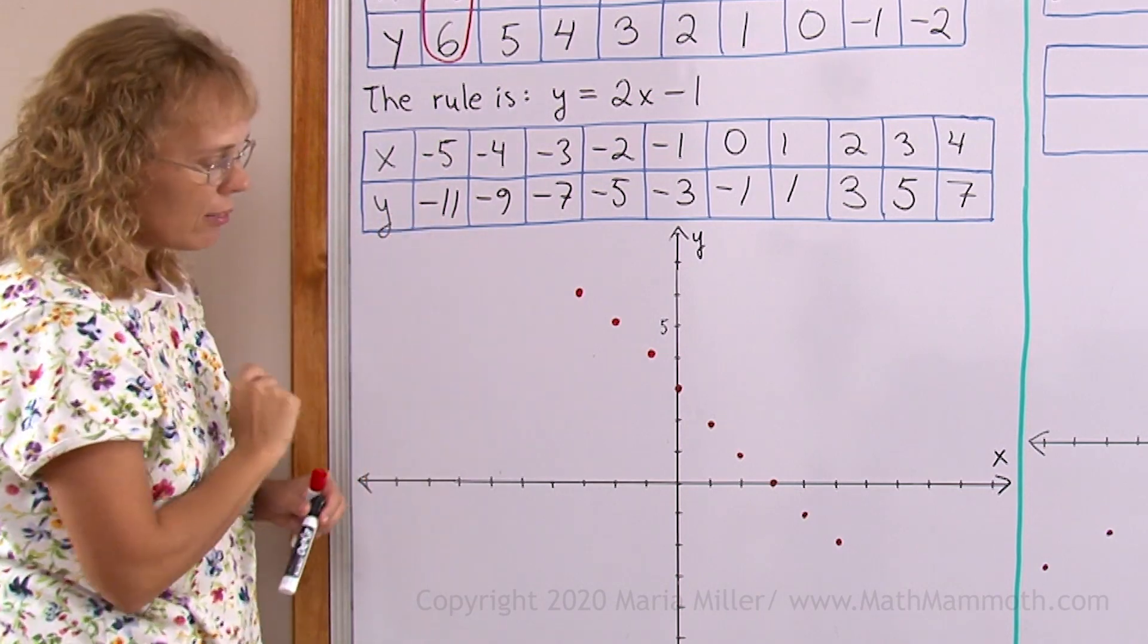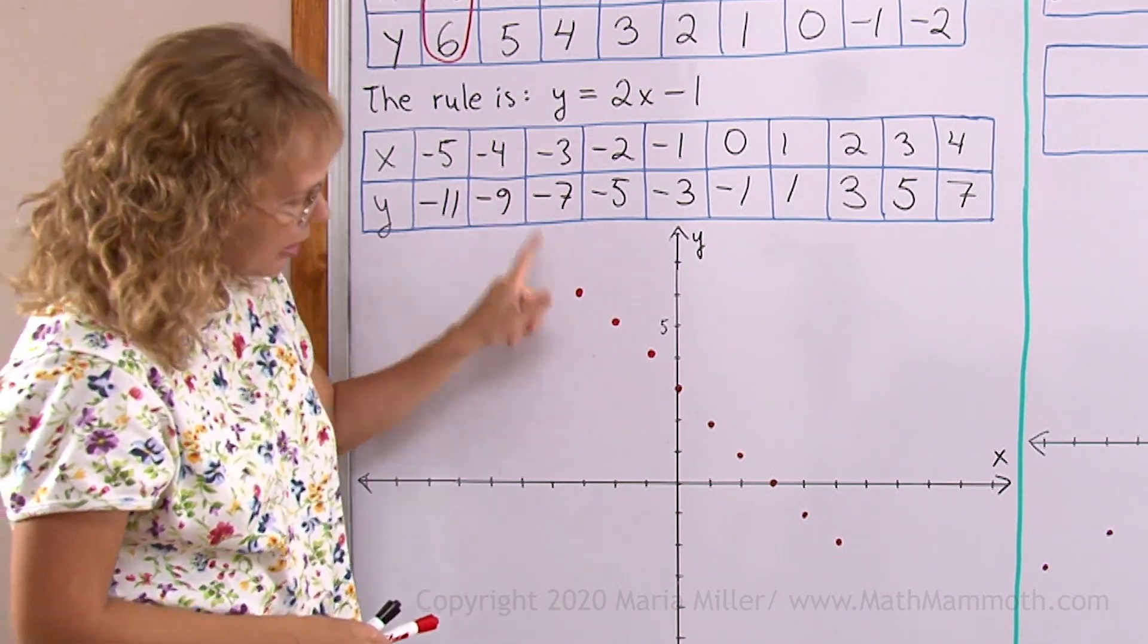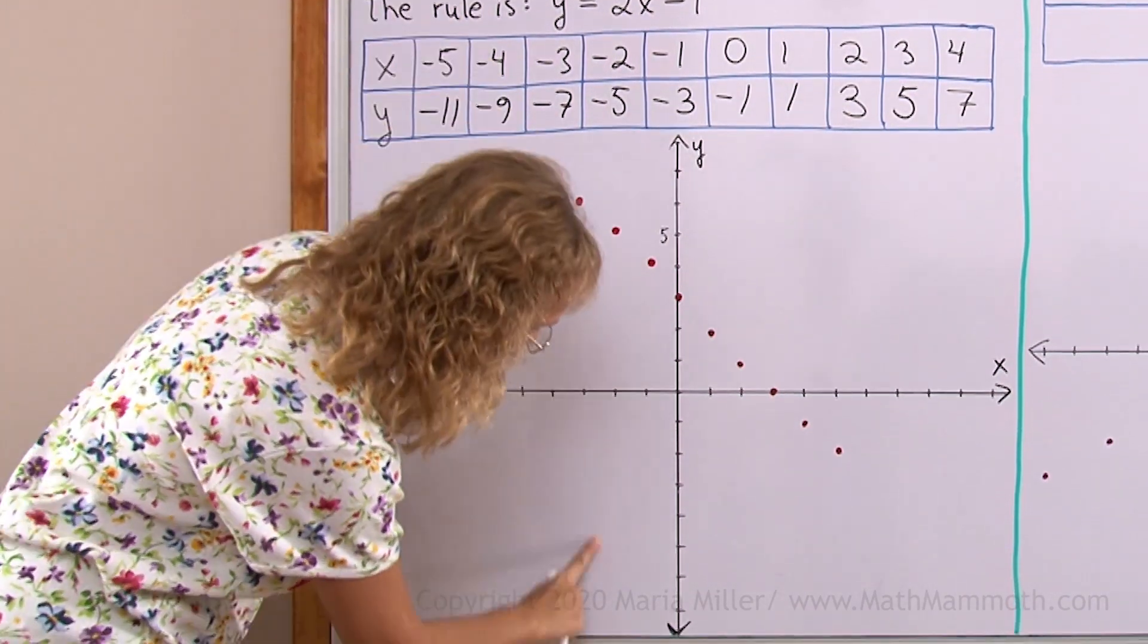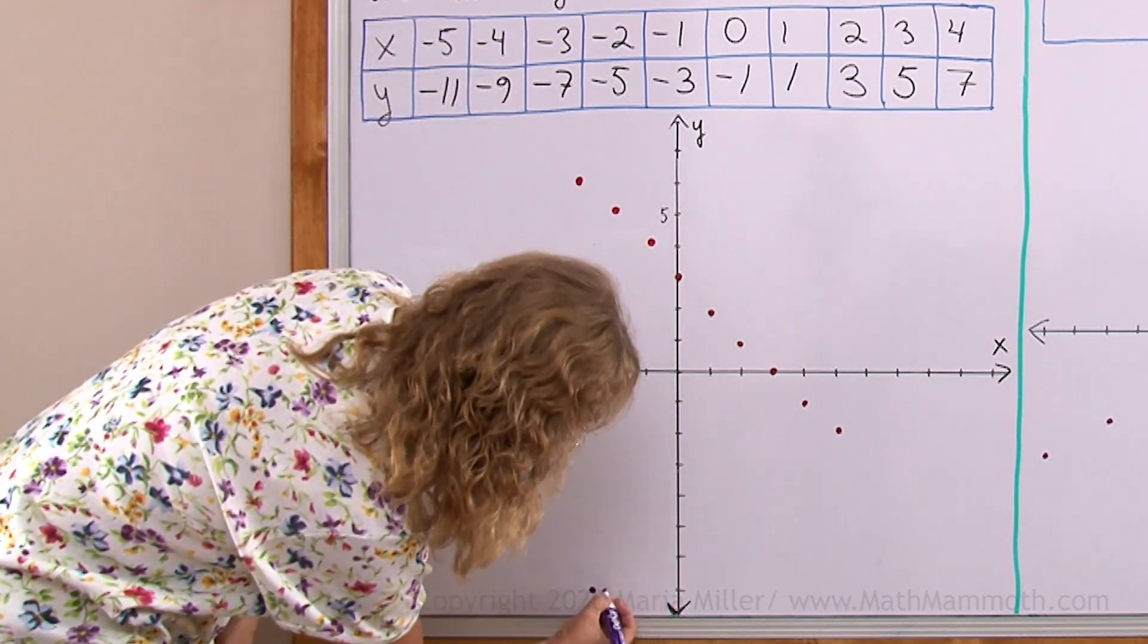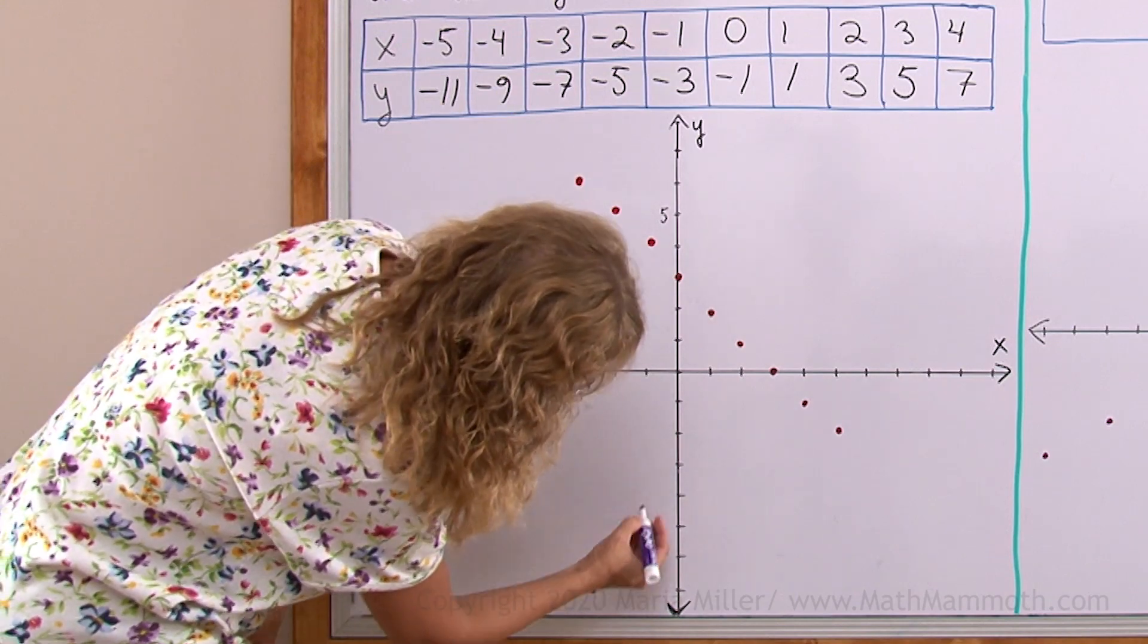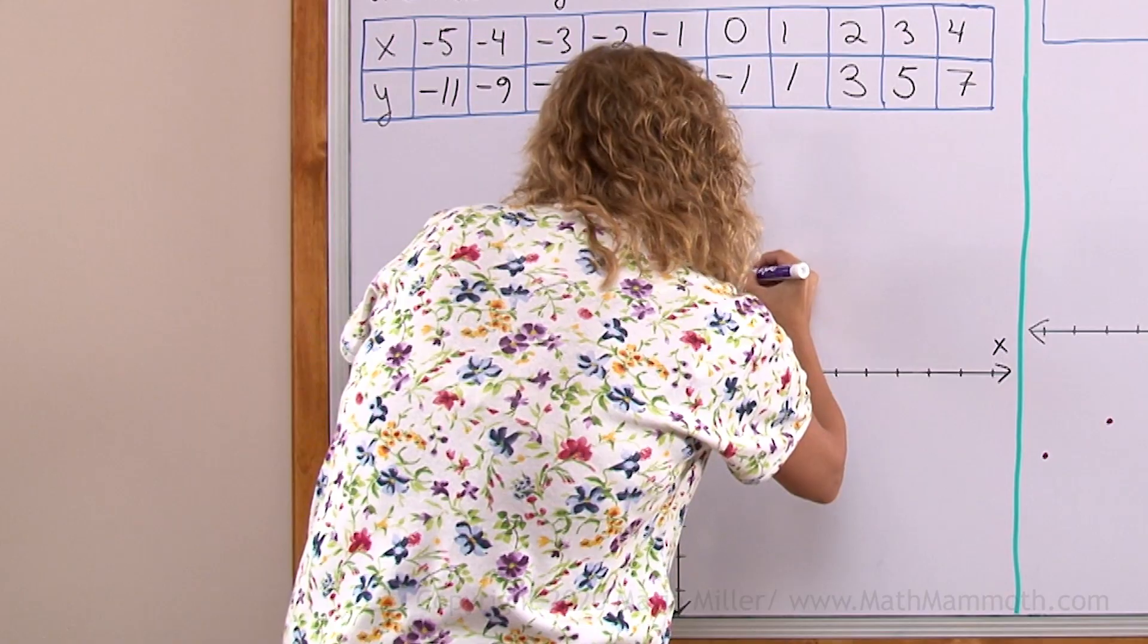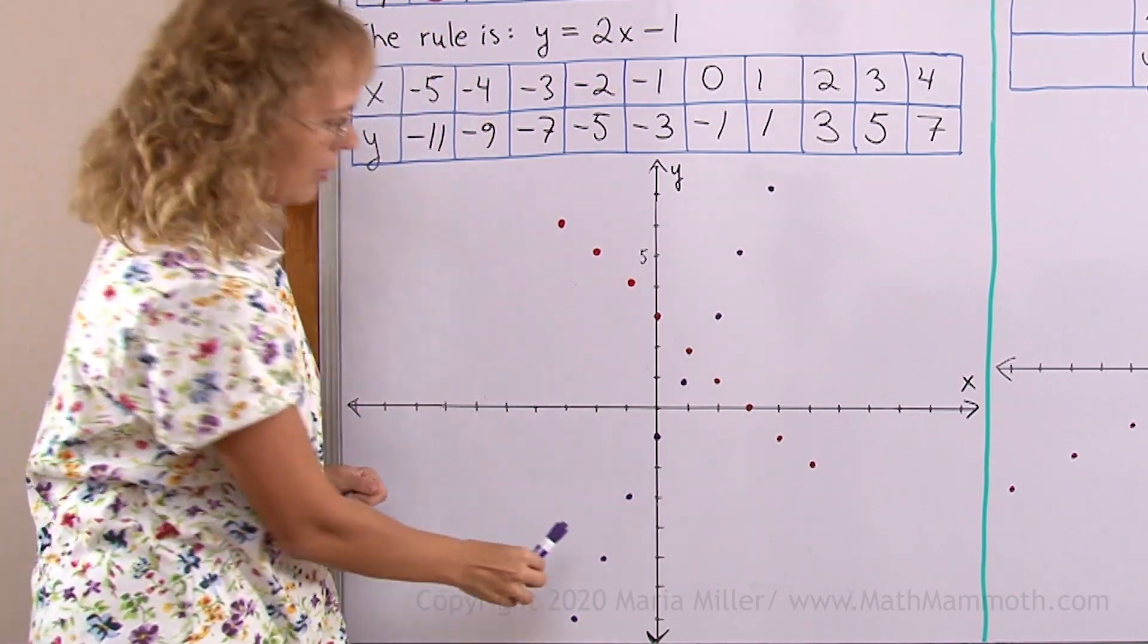Now we're ready to plot the points. x equals negative 5, y equals negative 11. I know that won't fit on my grid at all. Neither will this point. Negative 4, negative 9. Let me see. That one is the first one we can plot here. Negative 3, negative 3 here and negative 7 all the way down here. And then negative 2, negative 5 goes 2 up y-wise. Negative 1, negative 3, 0 minus 1, 1, 1, 2 and 3. It's again a linear pattern going in a line like that.